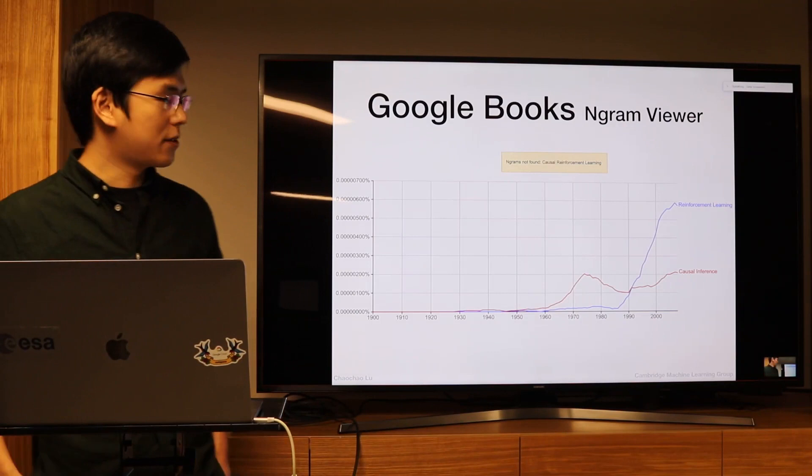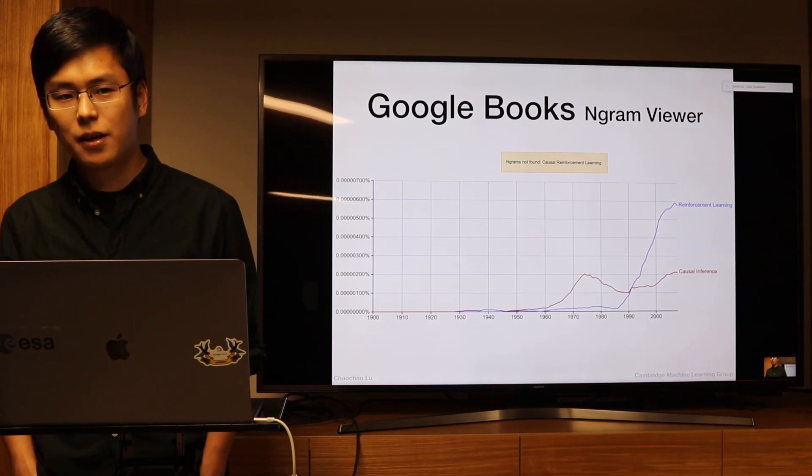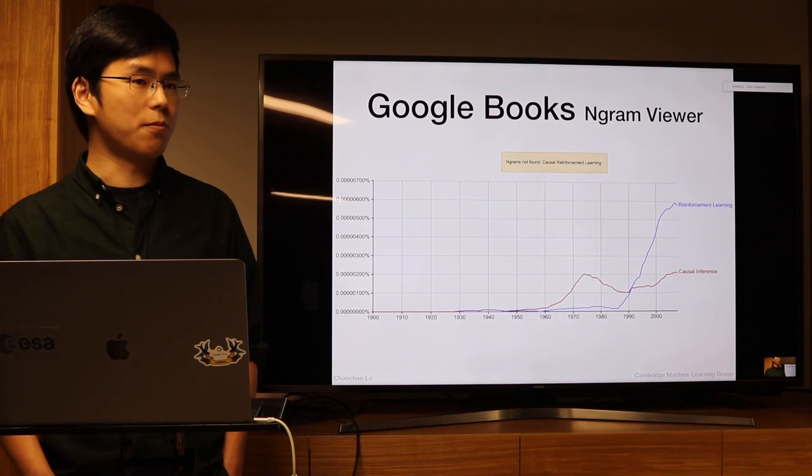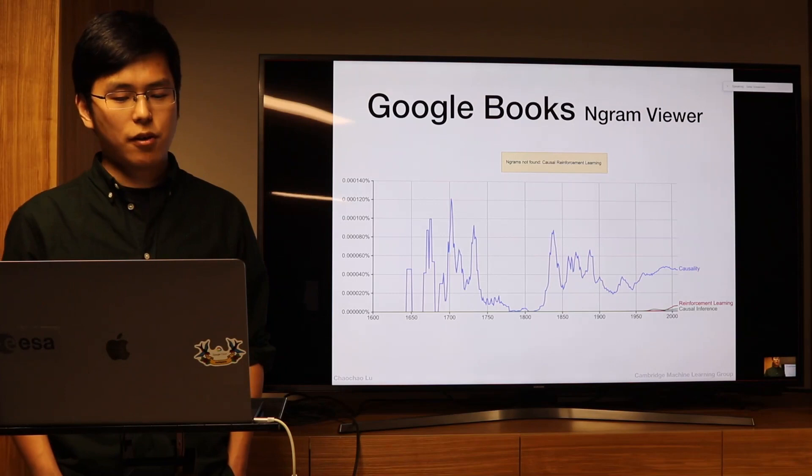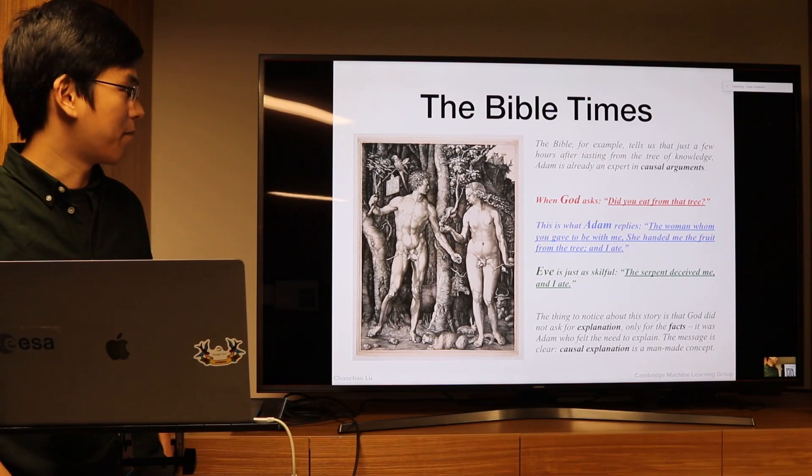If you search 'causal reinforcement learning' in Google Books you can find nothing, but if you search 'reinforcement learning' and 'causal inference' separately, you can see they are getting more and more attention in recent years. And if you search 'causality,' it has a very long history in the literature.